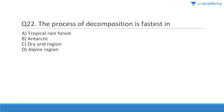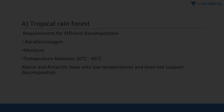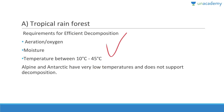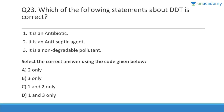Question 22: The process of decomposition is fastest wherever there is high temperature, more moisture, and more air. Answer is A, tropical rainforest. Requirements for efficient decomposition include aeration, oxygen, moisture, and temperature between 10 to 45 degrees Celsius. In alpine or Antarctic regions, very low temperature does not support decomposition.